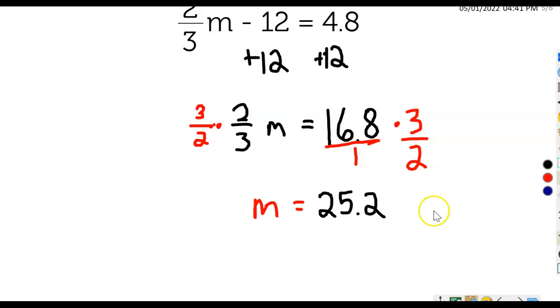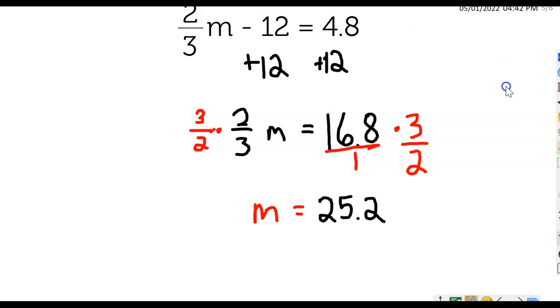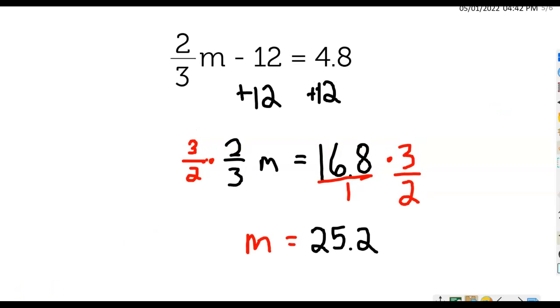So our answer here should be 25.2. And we can put it back in our equation and check it to see if we get the correct, see if we get 4.8 as the equation would say. That's it. That's a two-step equation done in several different ways, different examples here. So that's it. Thank you. Bye.